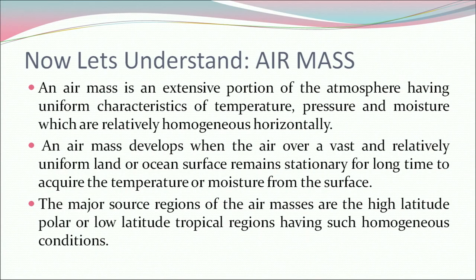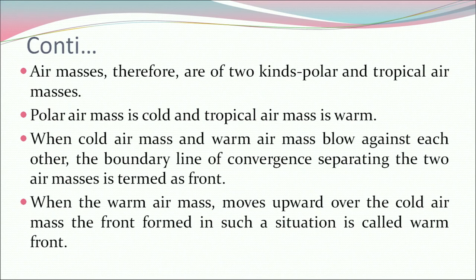Now let's understand air mass. An air mass is an extensive portion of the atmosphere having uniform characteristics of temperature, pressure, and moisture, which are relatively homogeneous horizontally. An air mass develops when air over a vast and relatively uniform land or ocean surface remains stationary for a long time to acquire temperature or moisture from the surface. The major source regions of air masses are the high-latitude polar or low-latitude tropical regions. Air masses are therefore of two kinds: polar and tropical. Polar air mass is cold and tropical air mass is warm.